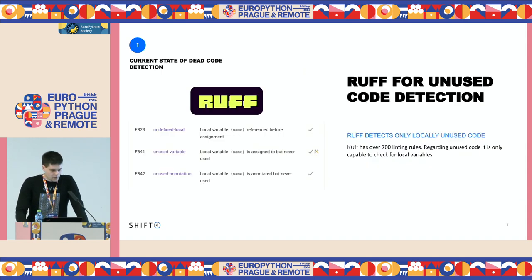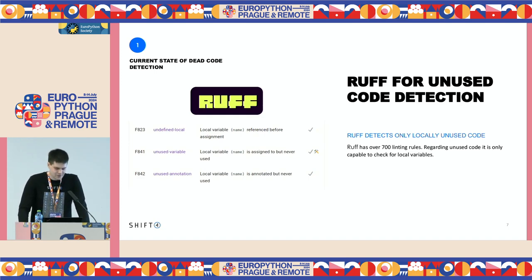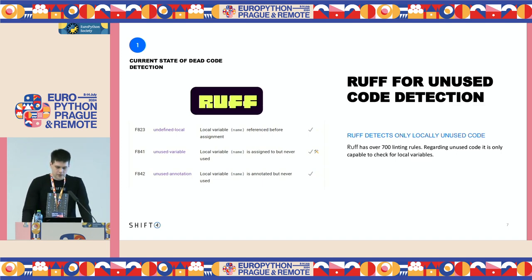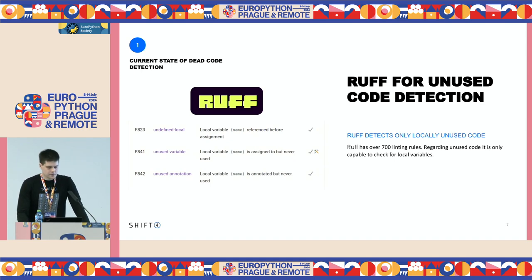I reviewed all the rules implemented in Ruff — there are more than 700 linting rules — and found out that there are only several rules which check for unused code. Those rules are for unused imports, local variables, and unused arguments. So it's only a tiny fraction of all possible unused code cases in a code base. Ruff is not capable of detecting globally unused code at the moment.